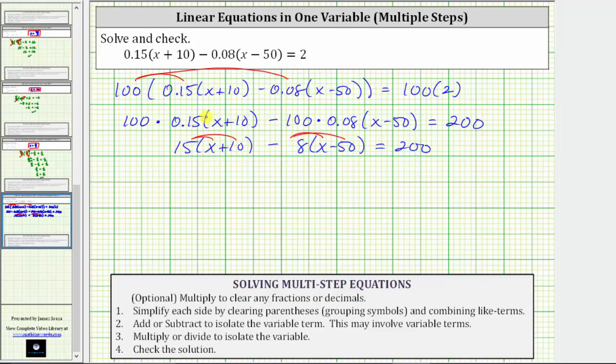15 times x is 15x plus 15 times 10 is 150. Distributing negative 8, we have negative 8 times x, which equals negative 8x, giving us minus 8x. And then negative 8 times negative 50 is positive 400, giving us plus 400, equals 200.